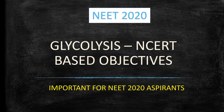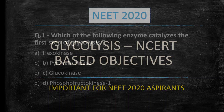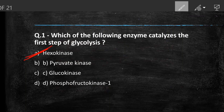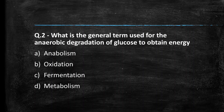You can comment your answer and I will give you time for that. Our first question: which of the following enzymes catalyzes the first step of glycolysis? (A) Hexokinase, (B) Pyruvate kinase, (C) Glucokinase, (D) Phosphofructokinase. The right answer is option A, hexokinase — you will find this question very easy because you just revised the topic.